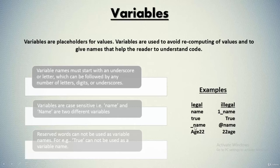Similarly, you can have underscore_name, but you cannot have @name. And you can have age_22, but you cannot have 22age because we cannot start with digits.